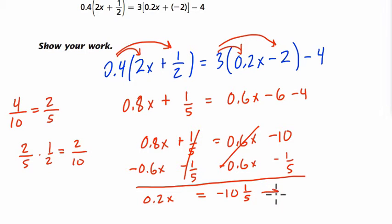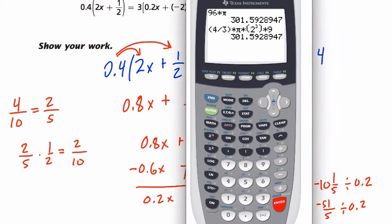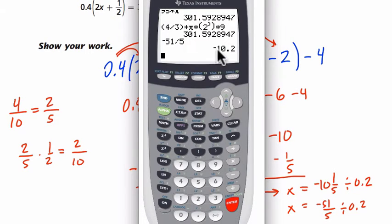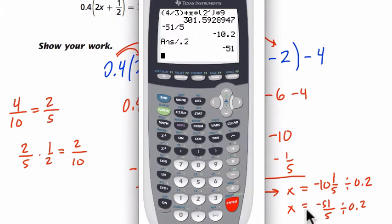So now we've got to solve for x. I'm going to divide both sides by 0.2, and we get negative 10 and one fifth divided by 0.2. Now negative 10 and one fifth is the same as negative 51 fifths divided by 0.2. This is where I might take the calculator out, though I don't need to. I'll show you both ways. So negative 51 divided by 5, hit enter. You can see it appeared right there. Divided by 0.2, enter. And there's our answer. x is negative 51.